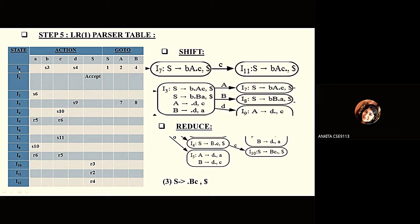I1 corresponding to dollar always has the 'accept' entry. In this constructed parser table, there are no shift-reduce conflicts — no cell has both S and R entries — and no reduce-reduce conflicts either, meaning no cell has two reductions. Therefore we can confirm that grammar 1 is an LR1 grammar.